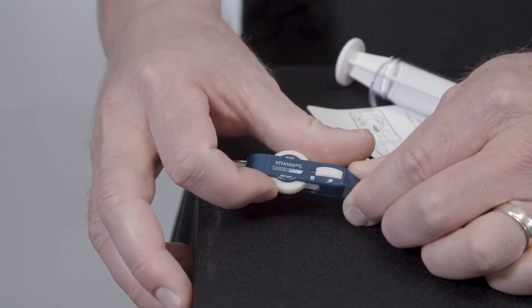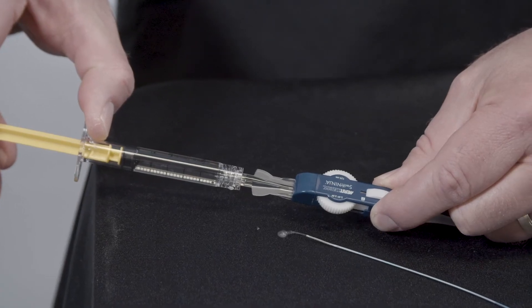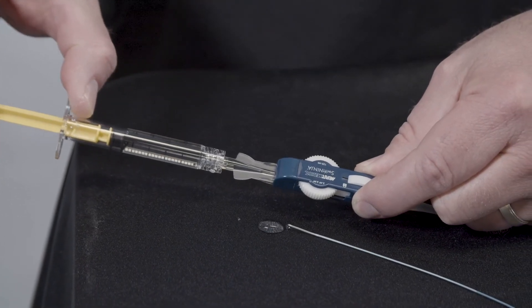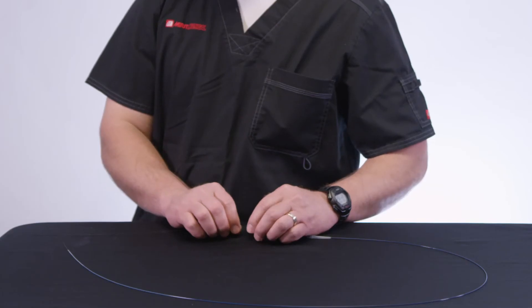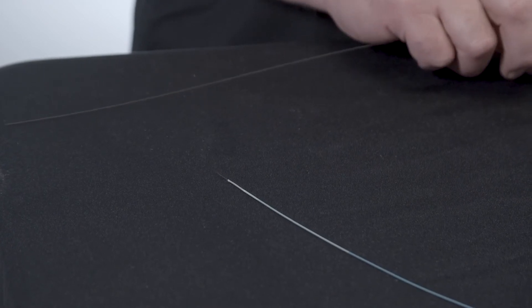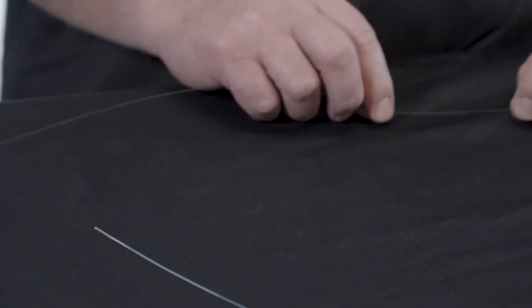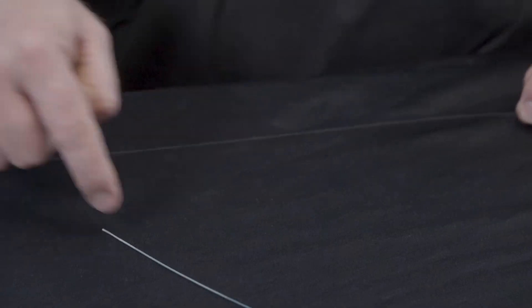Once the limit is reached on the steering dial, stop rotating the steering dial as the steerable tip will not bend any further. Flush the lumen of the Swift Ninja with heparinized saline. If using a guide wire to advance the Swift Ninja through the vasculature, pull the guide wire into the Swift Ninja so it is proximal to the most proximal marker band prior to articulating the Swift Ninja tip.